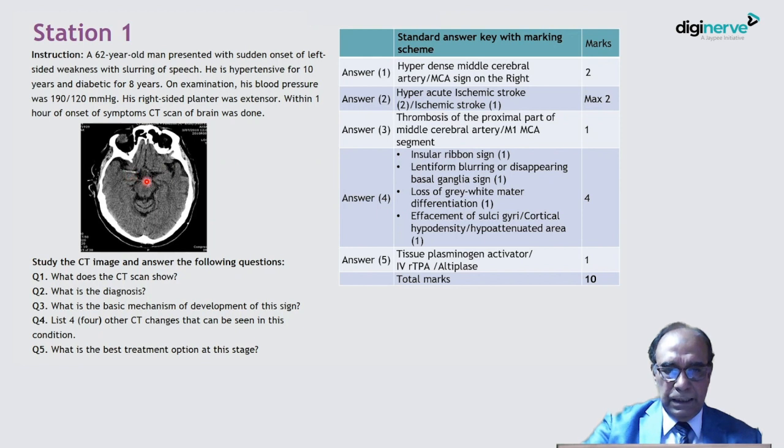Here there is in the sylvian fissure, there is insular and there is hyperdensity of the insular region. Lentiform blurring or disappearance of the basal ganglia sign. There is disappearance of the basal ganglia.